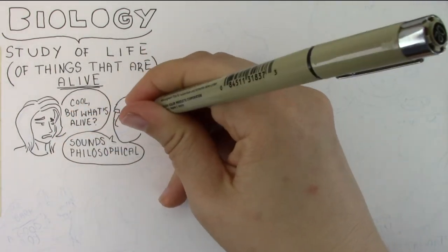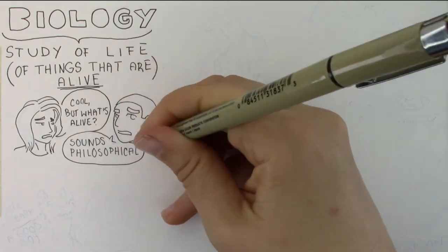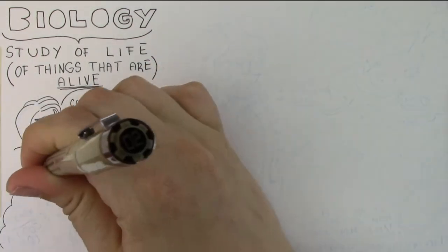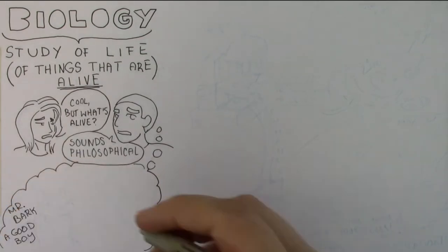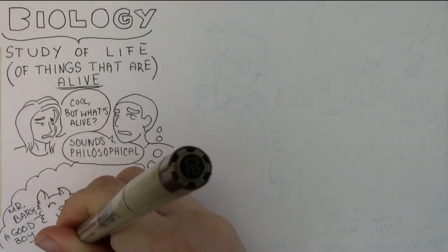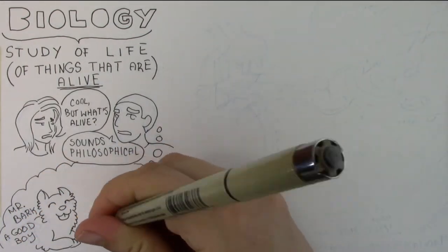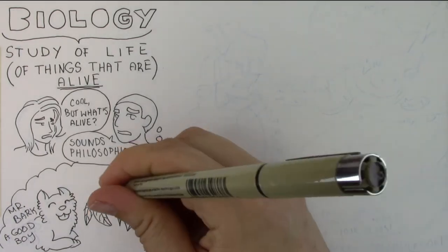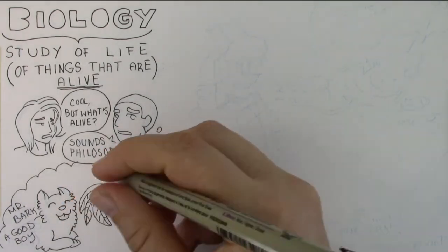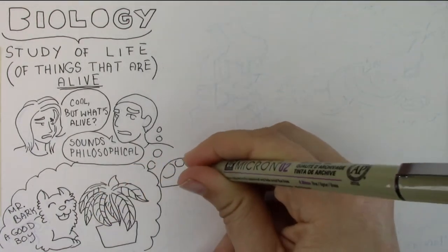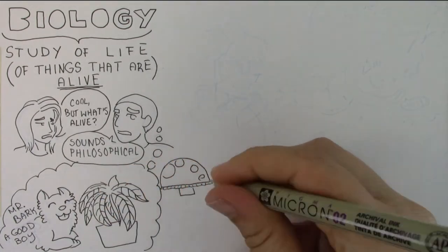This might sound strangely philosophical to really look at a thing and be like, how do we consider it as being alive or not? But actually, there are a set of rules that we as biologists use to determine if something is alive or not. So when you think of living organisms, you probably think of things like your pets, maybe a potted plant that you have in your house. But it's not just plants and animals that are alive.